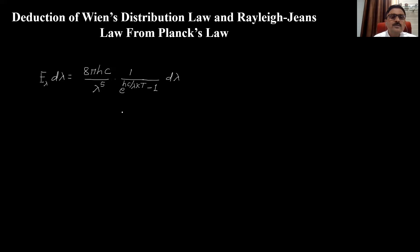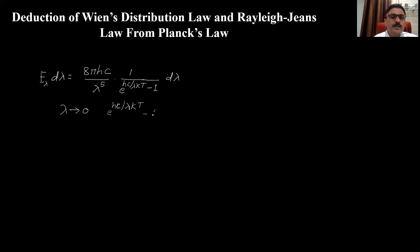Wien's distribution law behaves in accordance with the blackbody radiation spectrum in the low wavelength region. To derive Wien's distribution law, we assume λ is small — that is, λ tending to 0. Under this condition, we consider the term e^(hc/λkT), and since λ is very small, this term will be very large compared to 1.